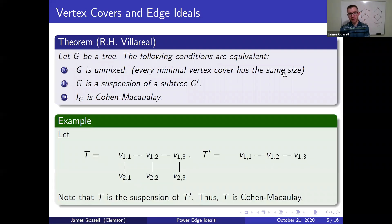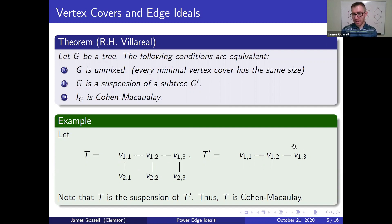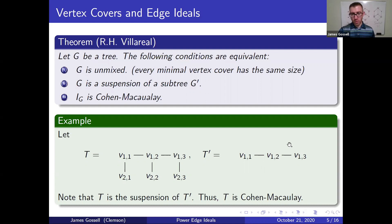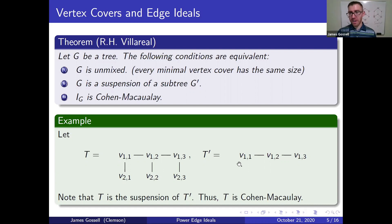Here's an example. We have two trees T and T-prime. T is a suspension: the subtree is a path with three vertices, and you tack on an edge and vertex to each vertex. T-prime is a tree but not a suspension — there's no subtree you could start with to get this graph as a suspension. In fact, every suspension has an even number of vertices, so that alone shows T-prime is not a suspension. From the theorem, T is Cohen-Macaulay while the edge ideal of T-prime is not.